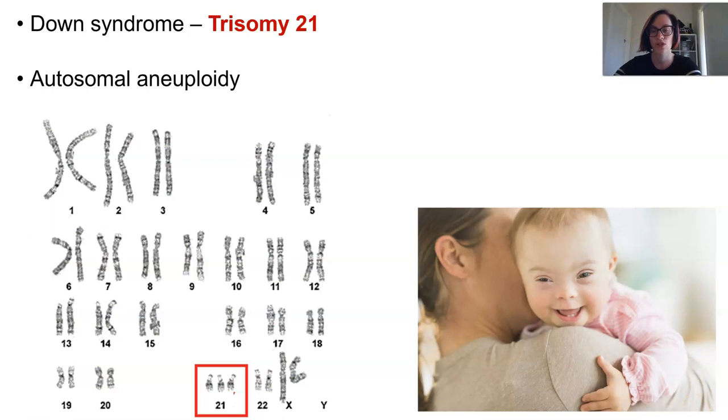Trisomy 21 is an autosomal aneuploidy. It doesn't impact the sex chromosomes, it impacts an autosomal chromosome. Other common autosomal trisomies are trisomy 13 and 18. However, people with these aneuploidies are rarely live births, and if they are, they can usually pass away within the first year of life.